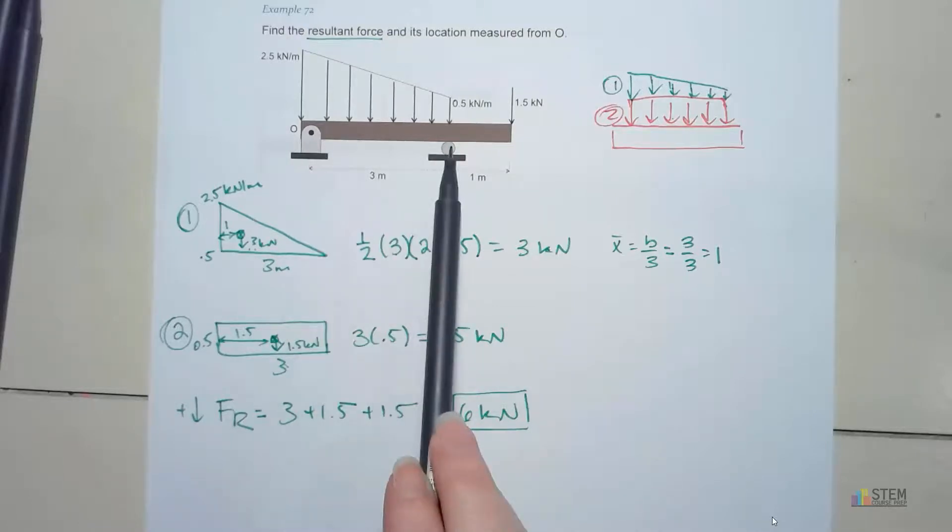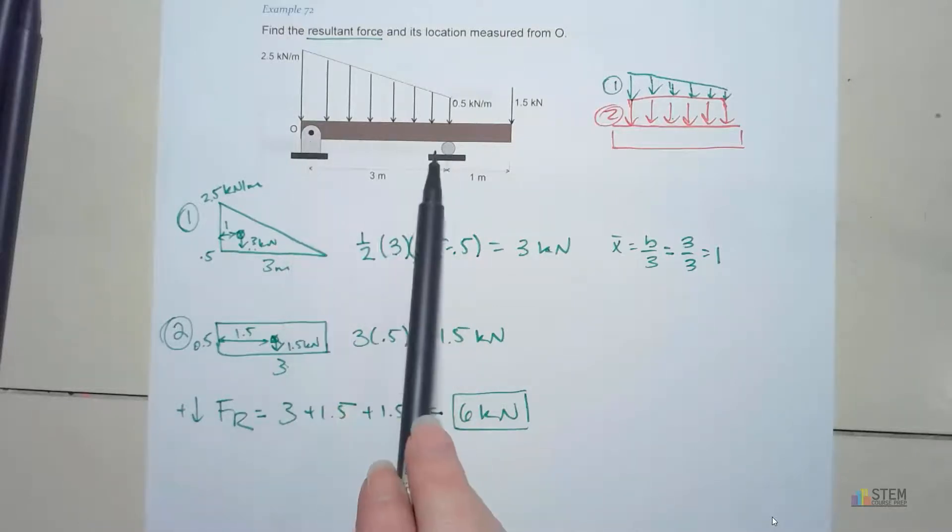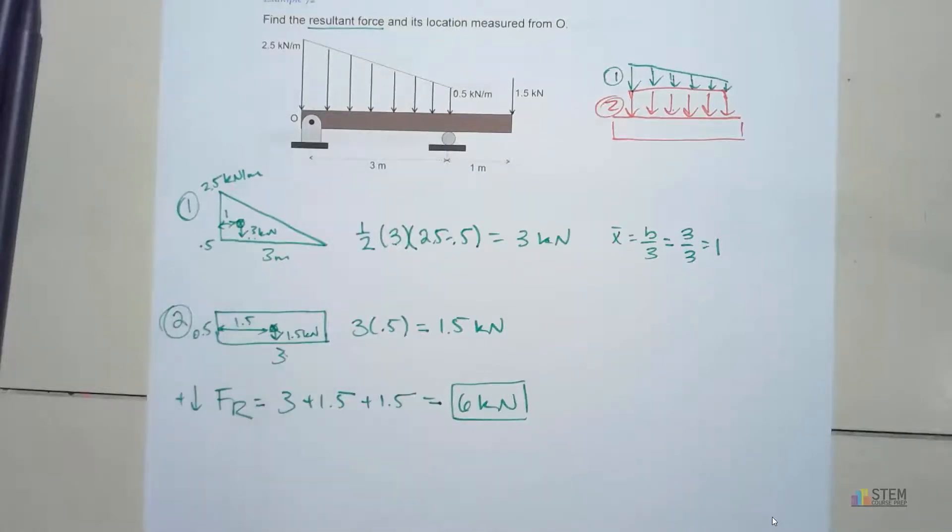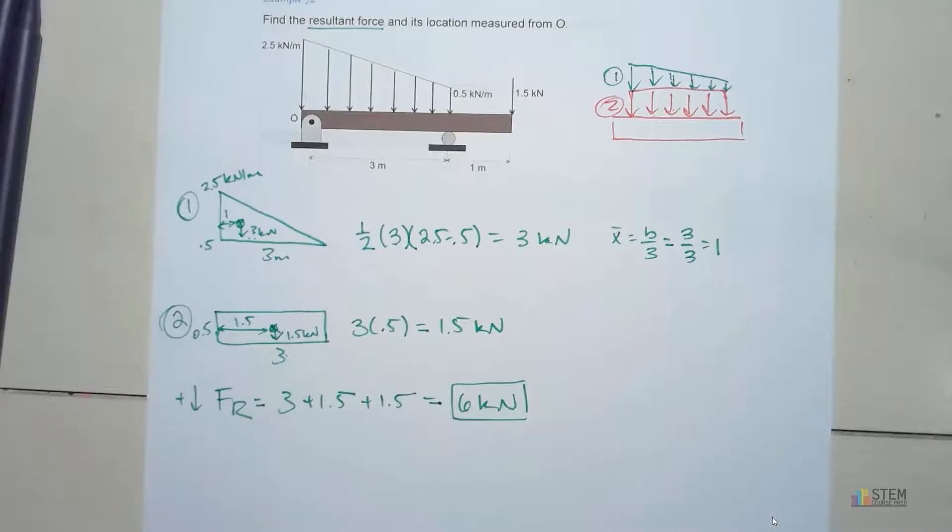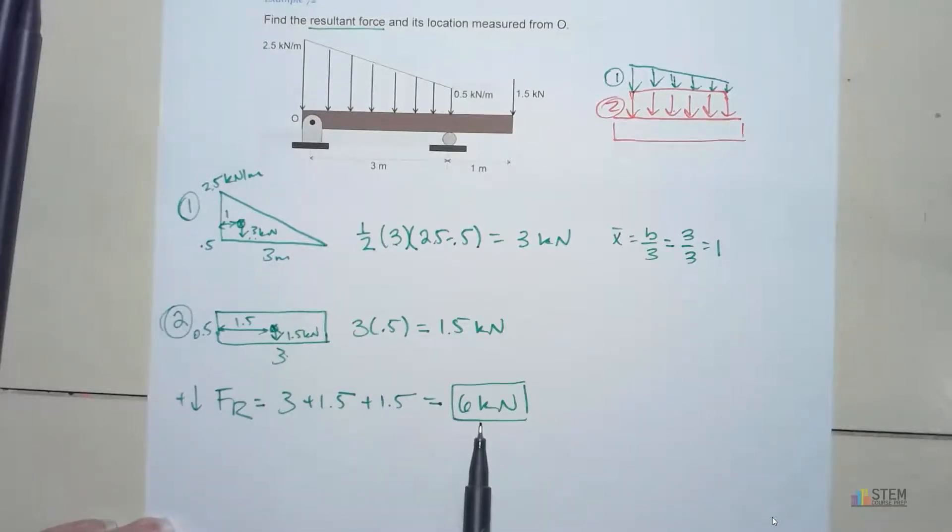And we're pretty much ignoring these pieces here because they're interacting with each other. So those forces will cancel each other out. So the pin and the roller forces, when they're all together, cancel each other out. That's why we don't have them here. Okay, now next let's look at finding the location. We need the location of this force.